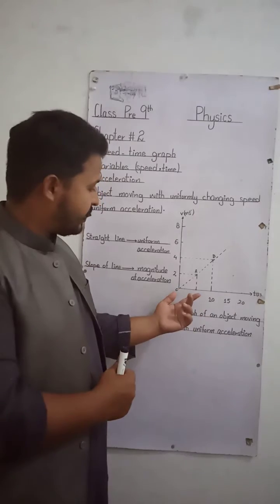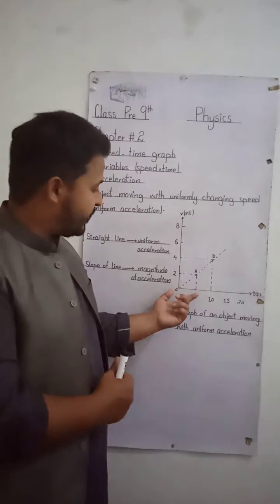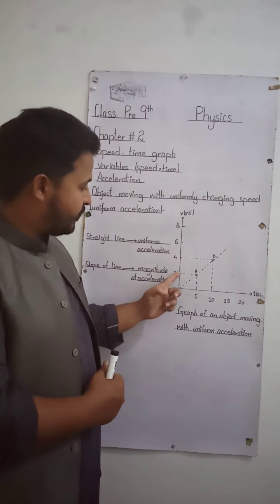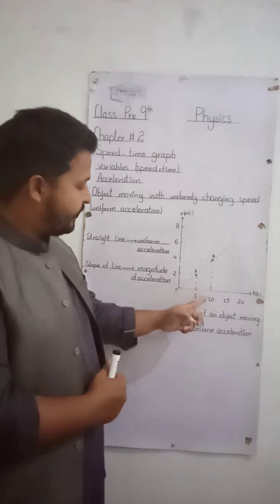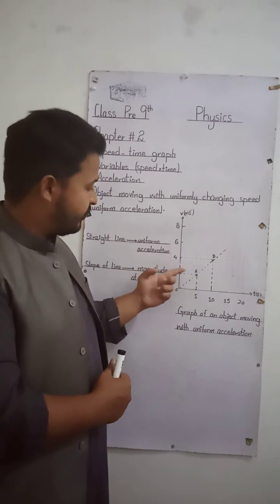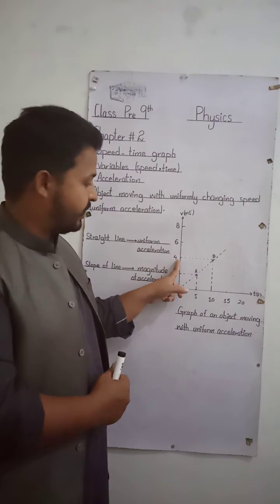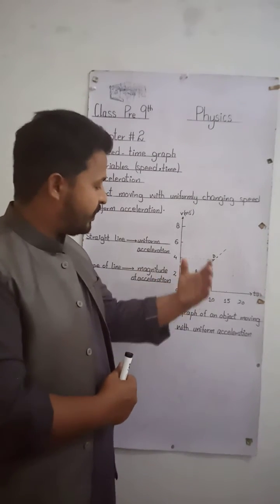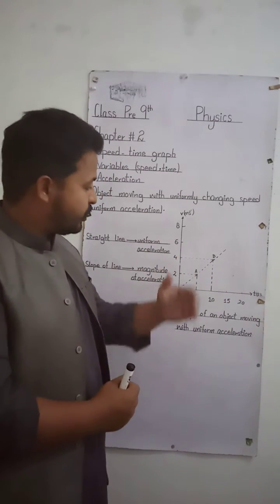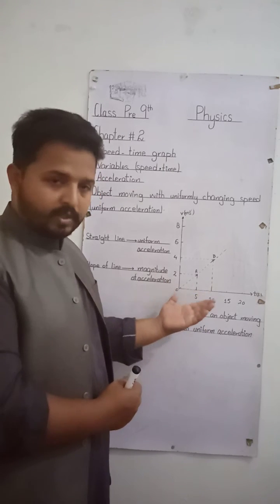From the graph, we will see that speed is changing at a constant rate. For example, after 5 seconds, the speed or velocity of the body is 2 meters per second. After 10 seconds, it is double the velocity at 5 seconds, that is 4 meters per second. And with the same rate, after 15 seconds, it will be 6 meters per second. So the velocity of the body is changing but at a constant rate.